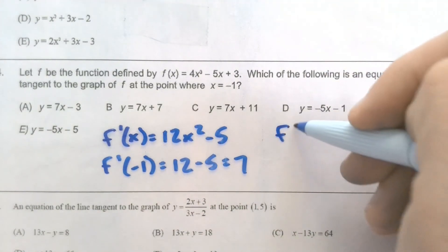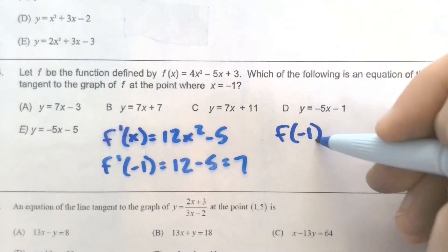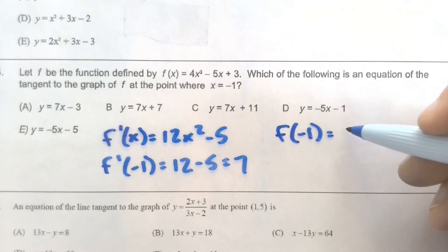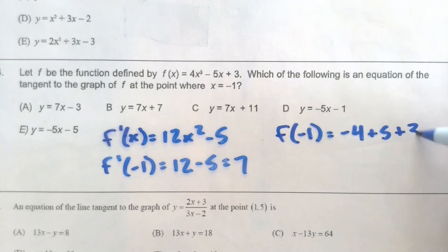And then to write an equation, we also need to find f of negative 1. So we'll have a negative 4, a positive 5, and a positive 3, so 4. So we've got the point, negative 1, 4.